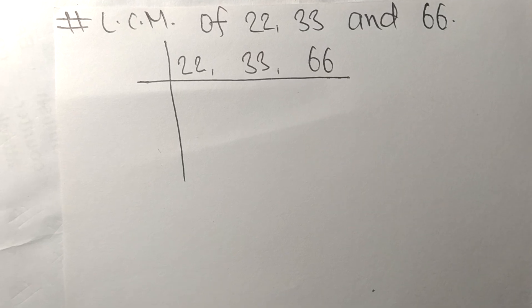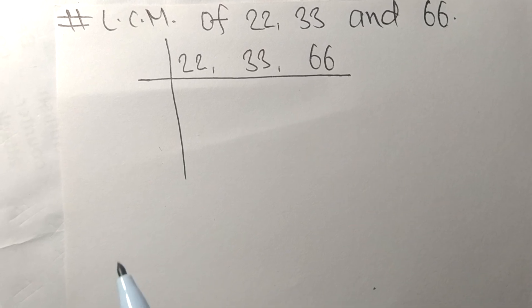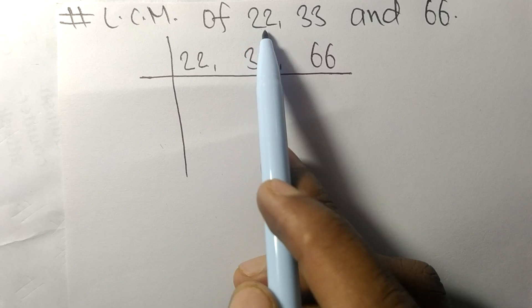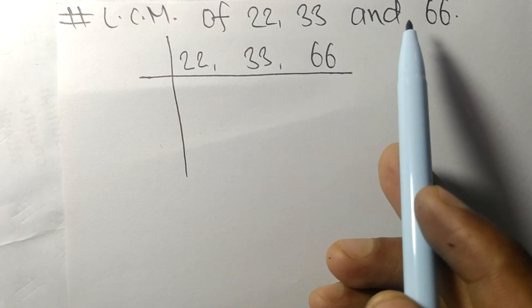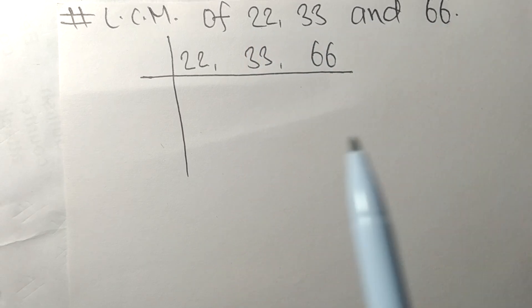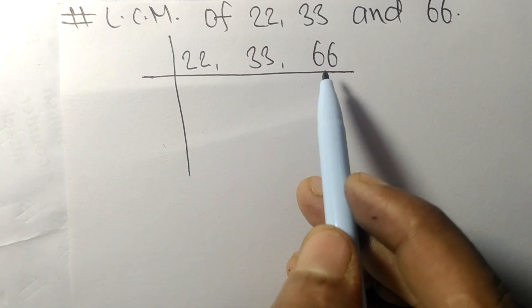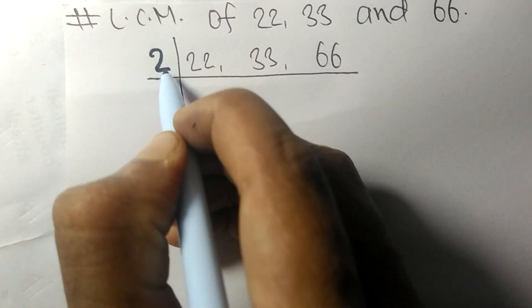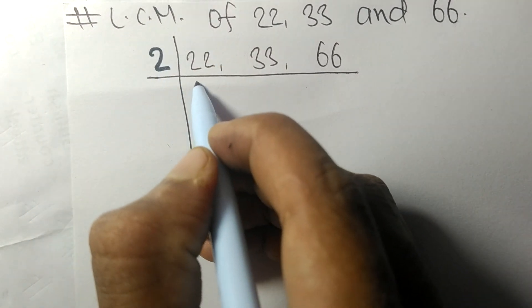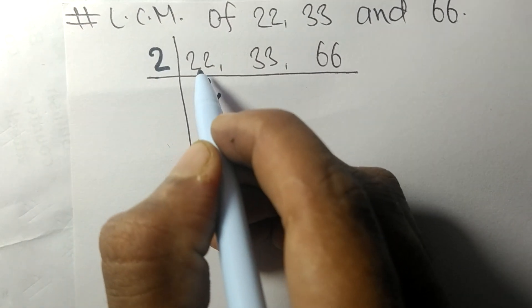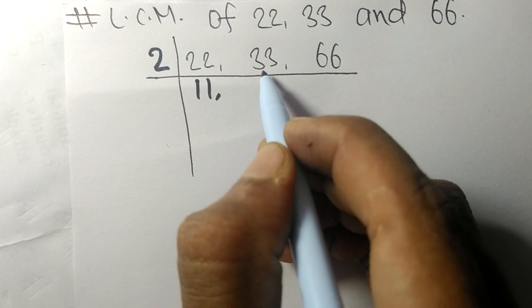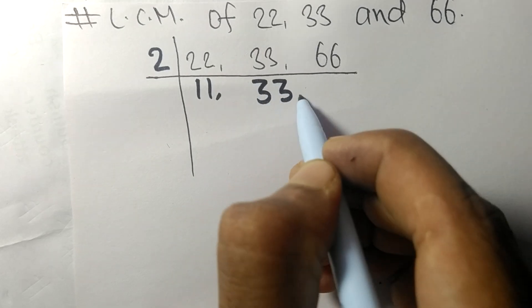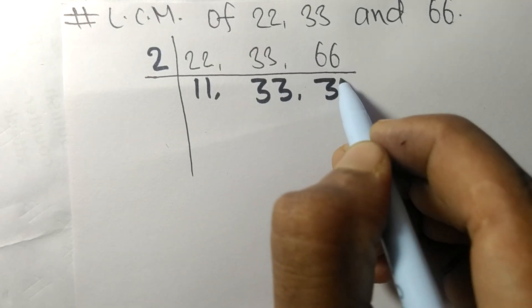Today in this video we shall learn to find the LCM of 22, 33, and 66. 22 and 66 are divisible by 2: 2 times 11 means 22, 33 is not divisible so it stays the same, and 2 times 33 means 66.